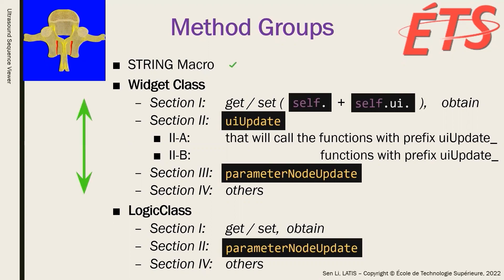We have four sections in the widget class. Section 1 includes the paired functions with prefix get or set, which retrieve or assign the class member values or user interface values. For the other value request functions, we use prefix obtain.